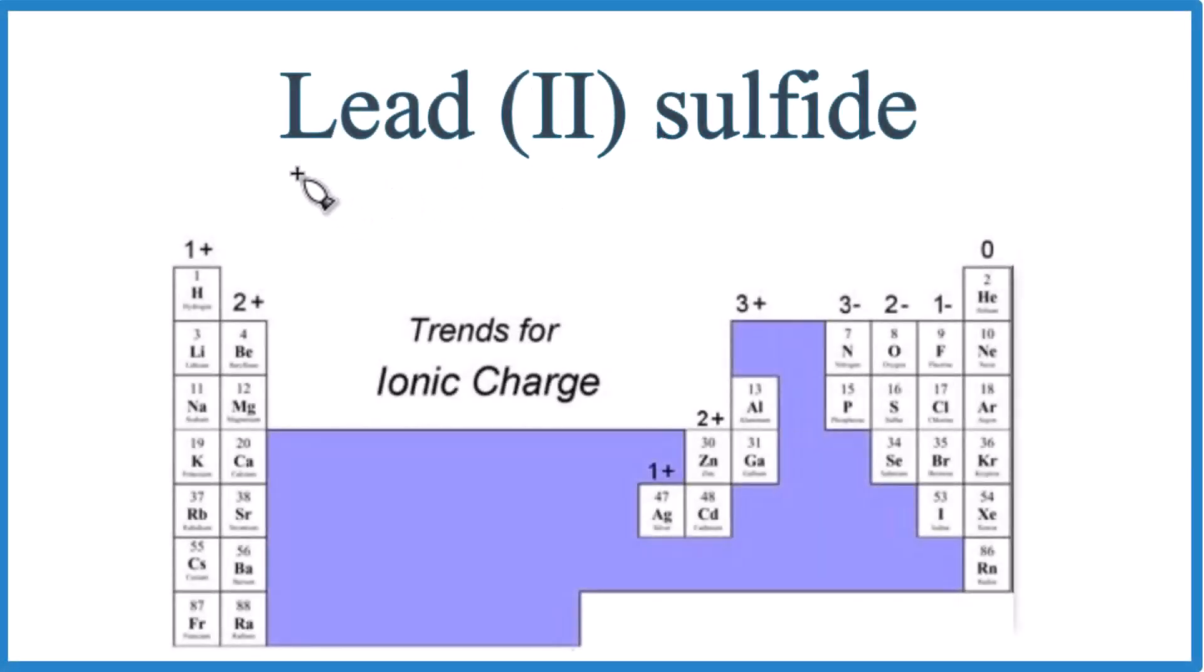Let's write the formula for lead (II) sulfide. First off, lead, that's a metal, and then we have sulfide. Sulfide is from sulfur, so we have a non-metal. This is an ionic compound.